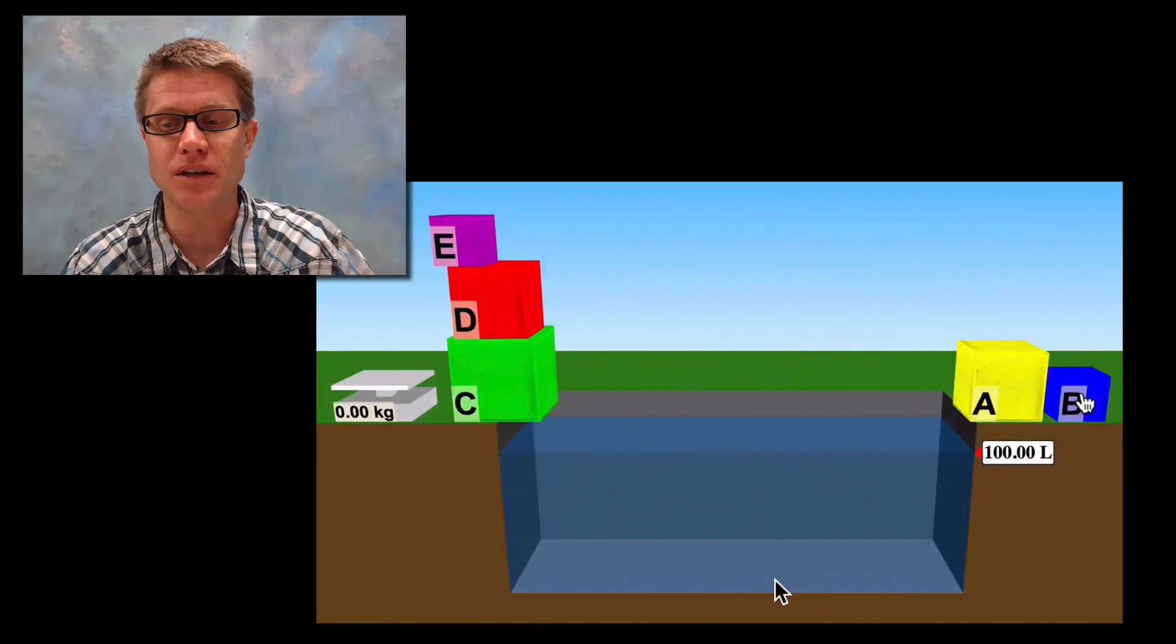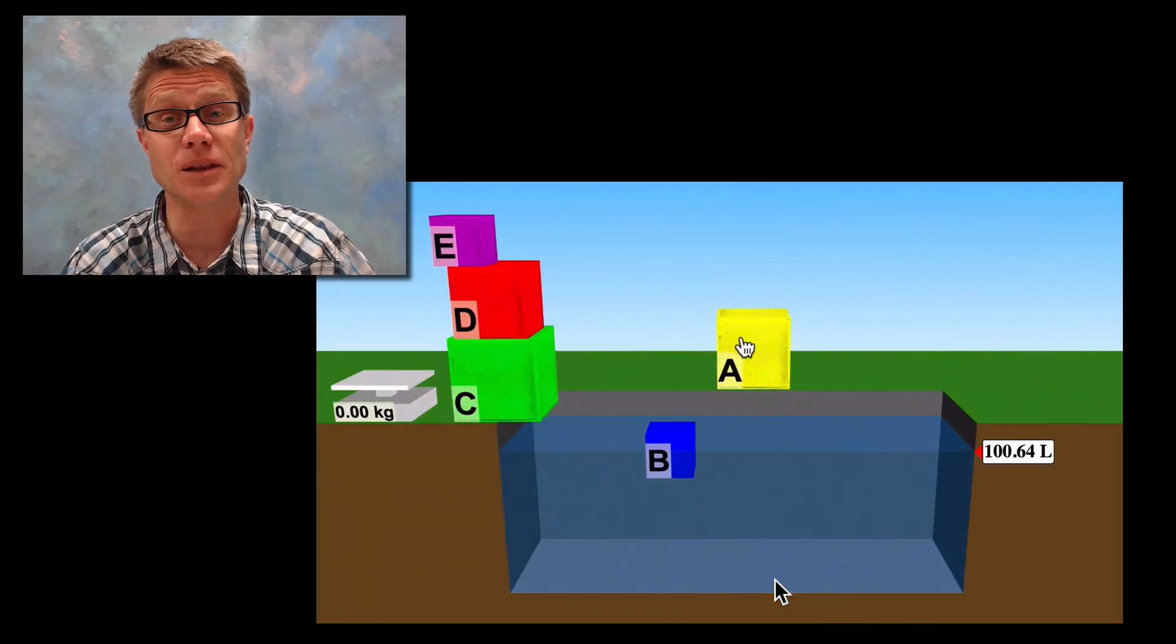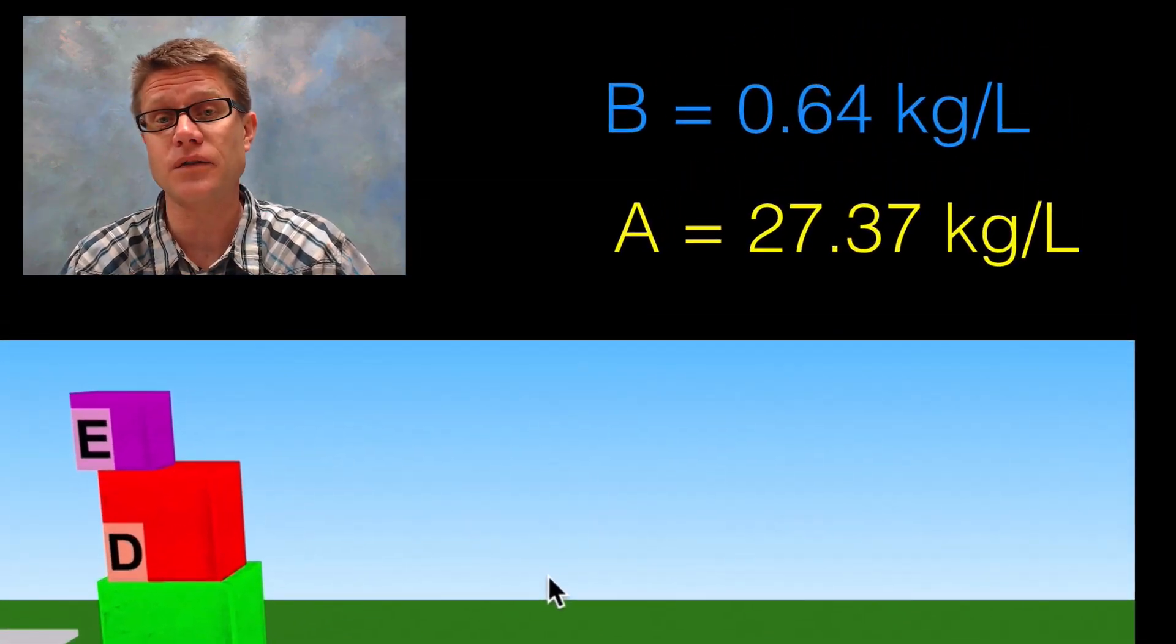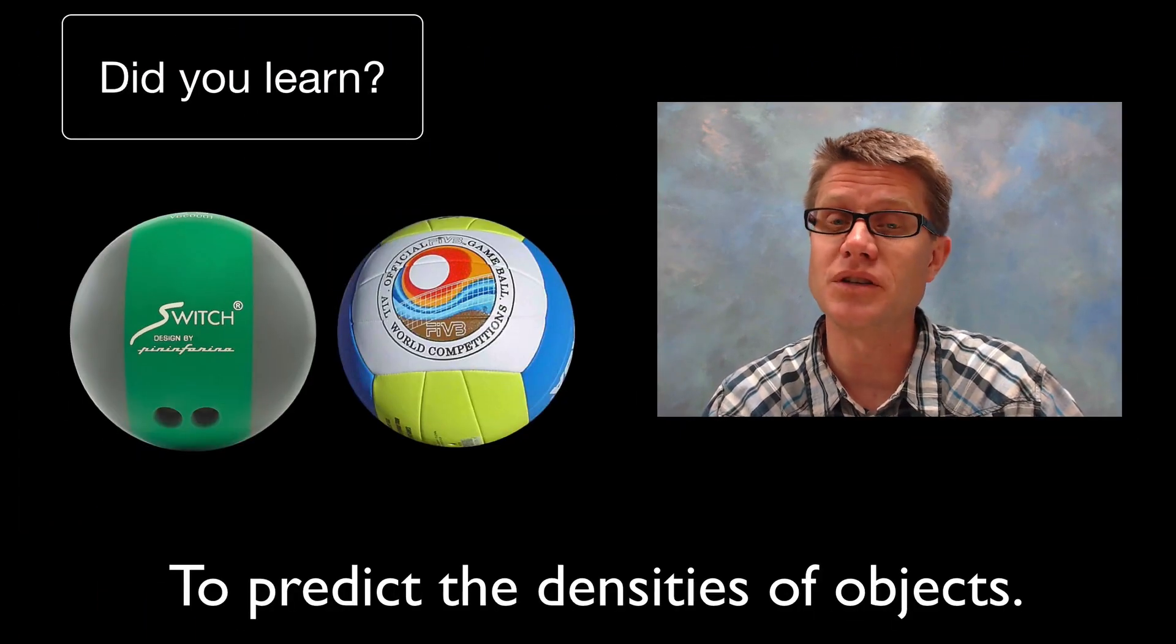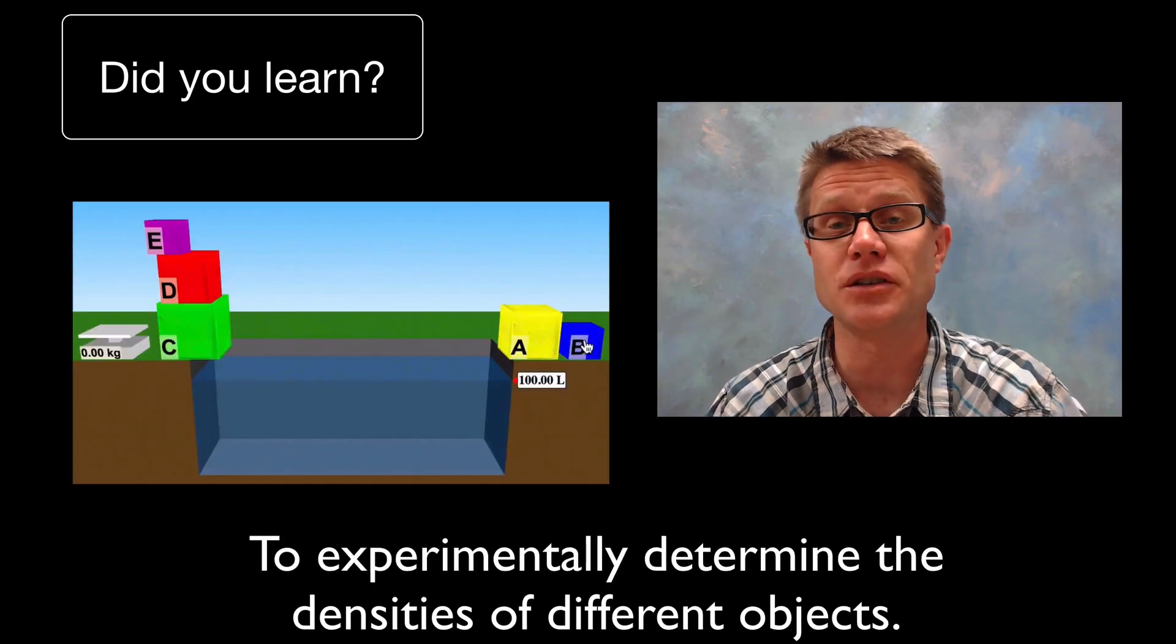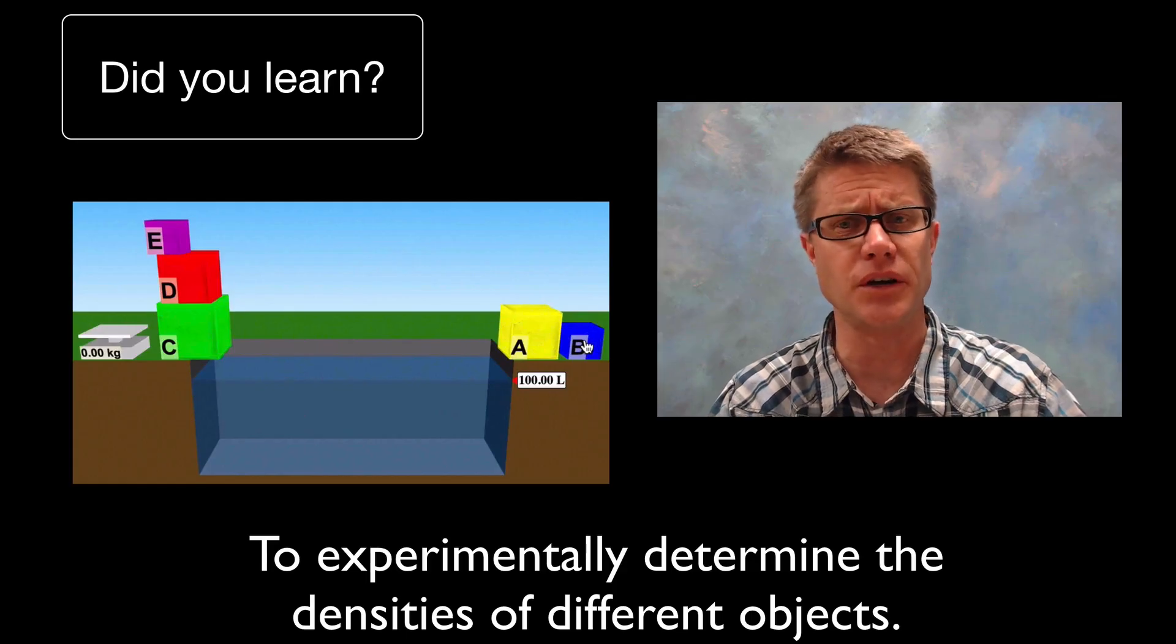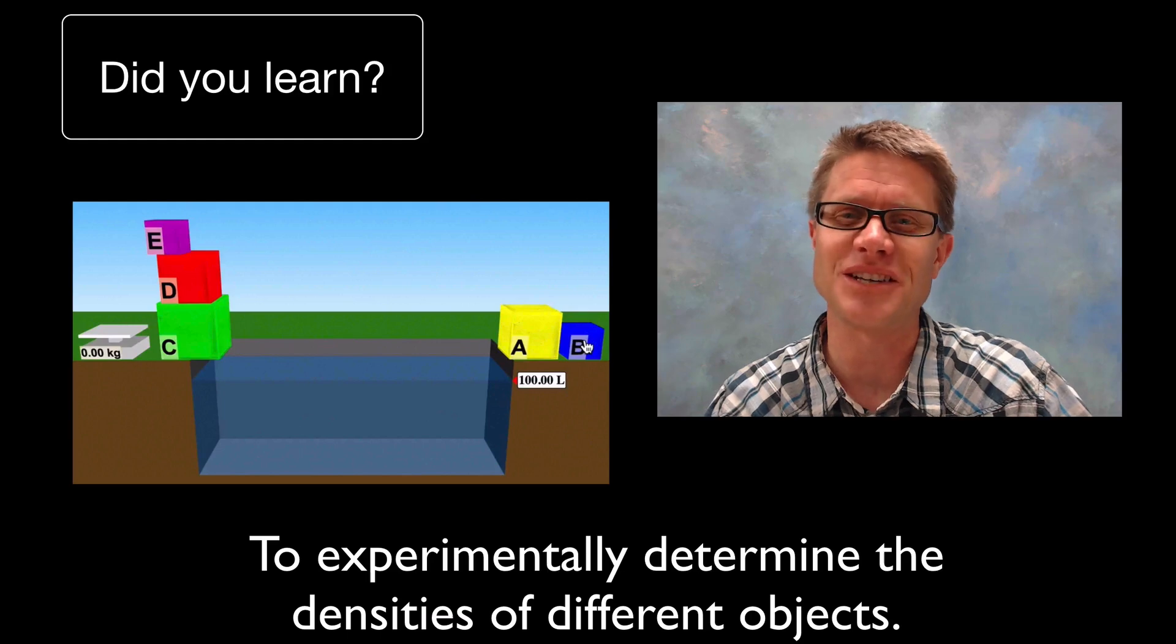Alright, so hopefully you've figured out the density. Now we're going to throw those two objects in. We'll throw in object B and it floats. So you should have got a density less than 1. And object A sinks, so it should have been greater than 1. These are the values that I got for density of objects B and A. You should be able to at this point predict the density of objects. You also should be able to experimentally determine the density of objects. You could do it by measuring their volume, figuring out the volume of a cube for example, or you can use water displacement to do it. And I hope that was helpful.